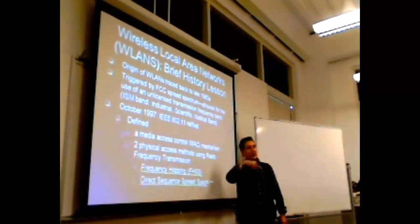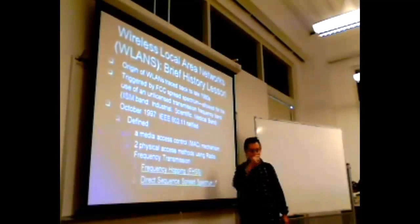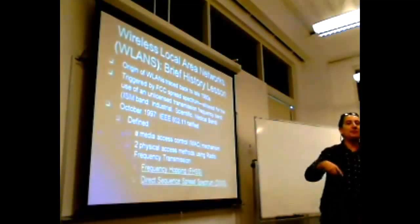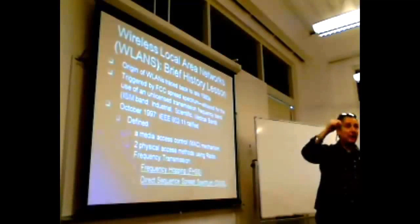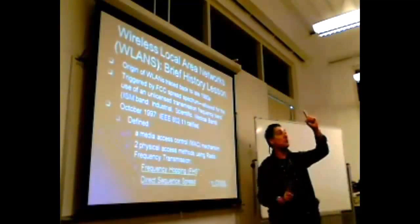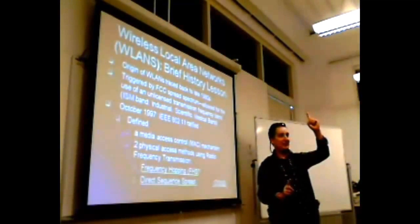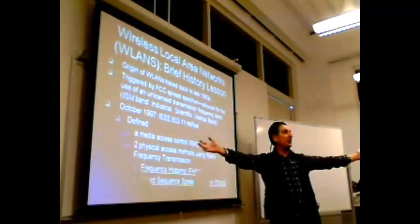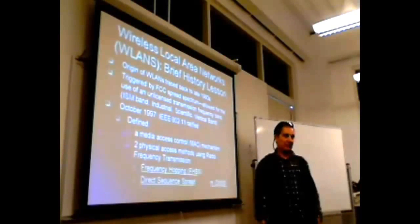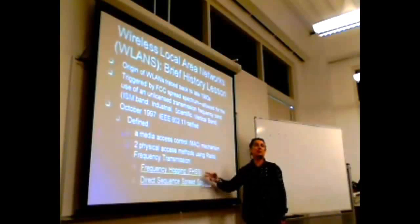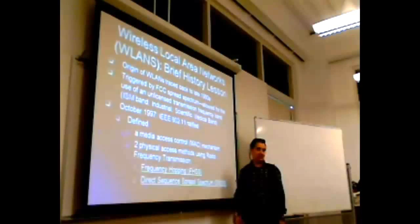That increase in spectrum can be done by frequency hopping or by direct sequence. The codes used in direct sequence are special because their autocorrelation function is an impulse. So when you add that code to your data, your data becomes like noise. That is the whole idea behind spread spectrum communication systems.